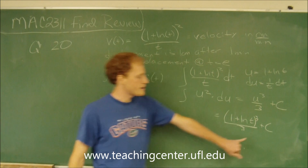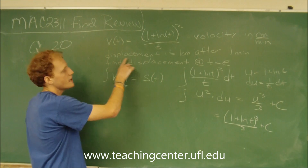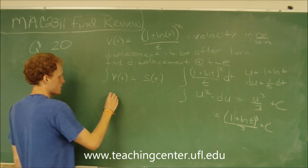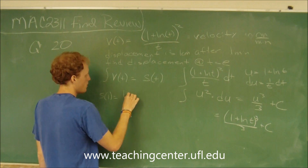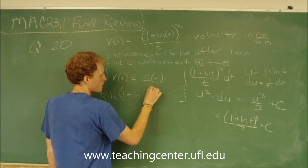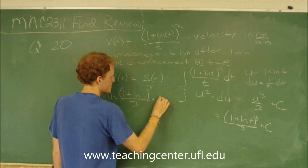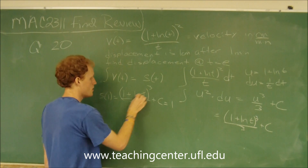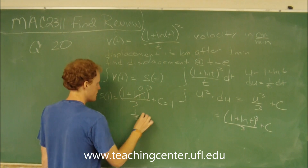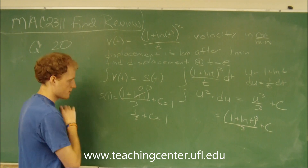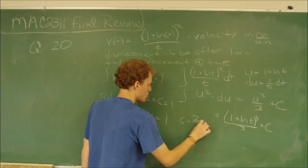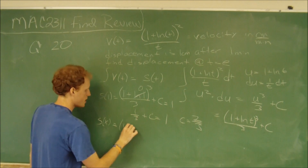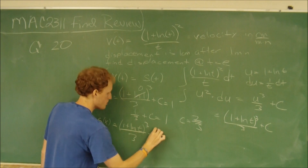We first need to figure out what the C term is. It gives us that the displacement after one minute is one centimeter, so we plug in t equals 1. s of 1 equals 1 plus the natural log of 1, cubed over three, plus C equals 1. The natural log of 1 is zero, so we get one third plus C equals 1. Solving for C, we get C equals two thirds.